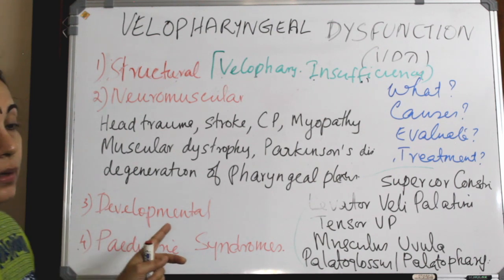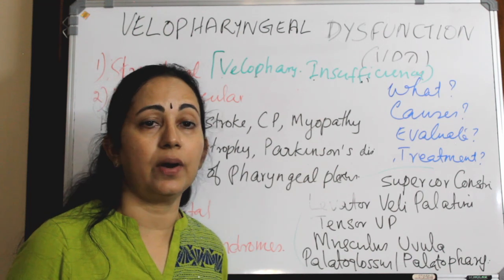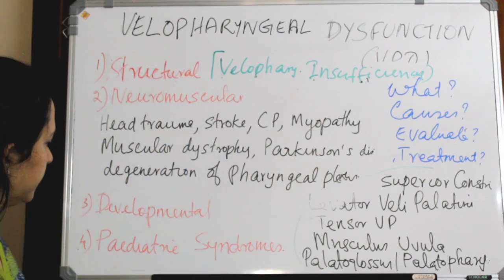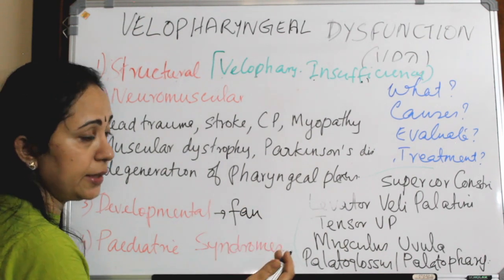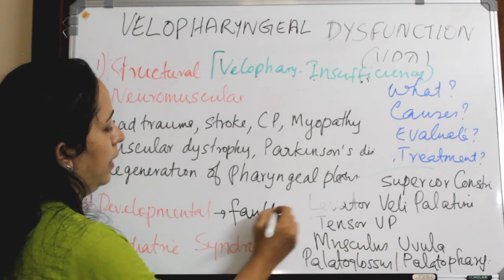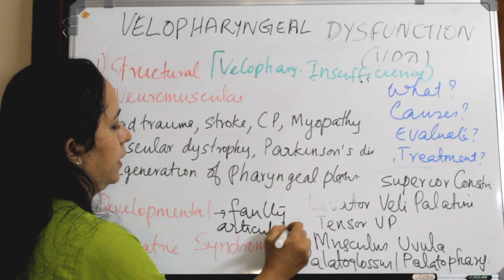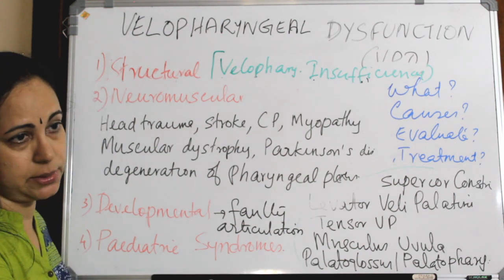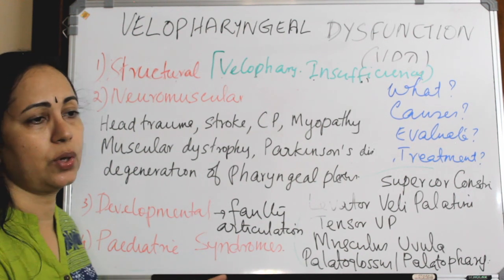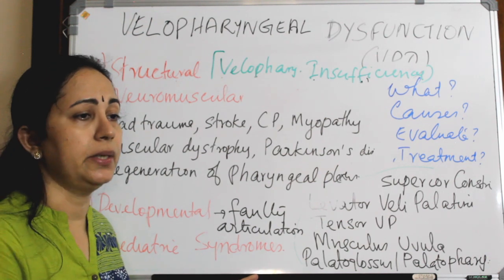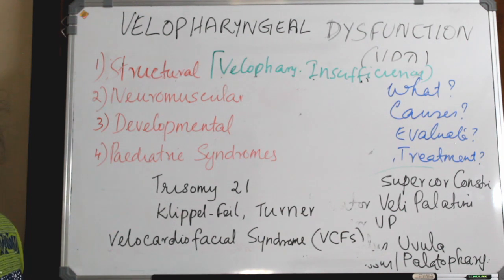In the developmental category, VPD is mainly due to faulty learning, faulty techniques of articulation, or errors in articulation, and this is usually picked up by the speech pathologist. Pediatric syndromes causing VPD include trisomy 21, Klippel-Feil syndrome, Turner syndrome, and others.